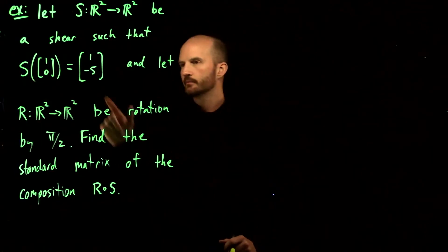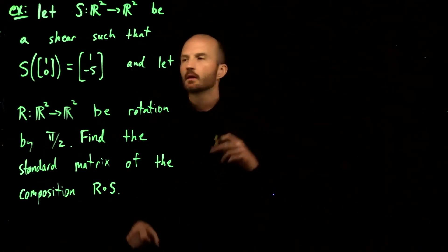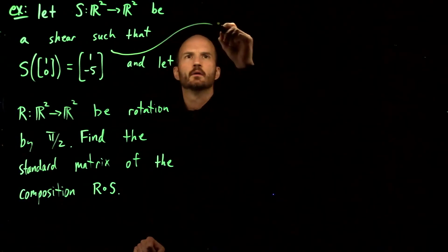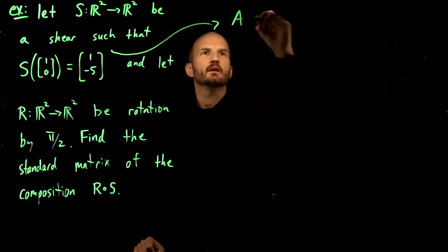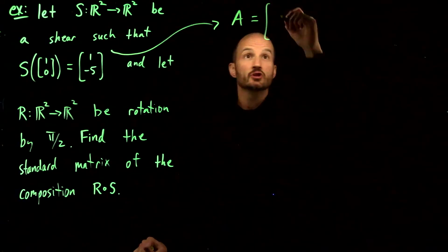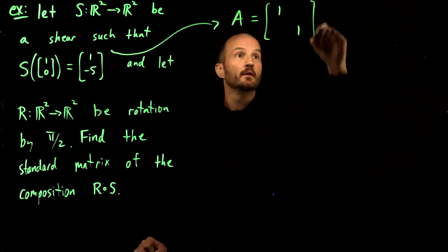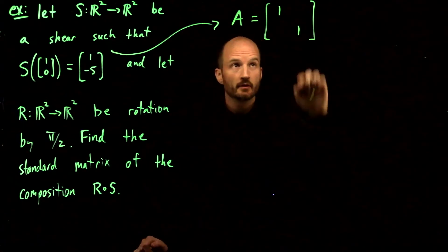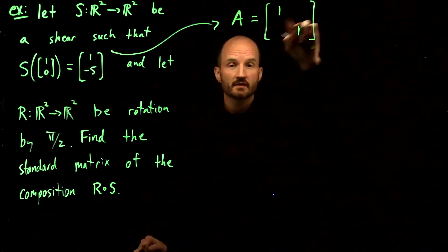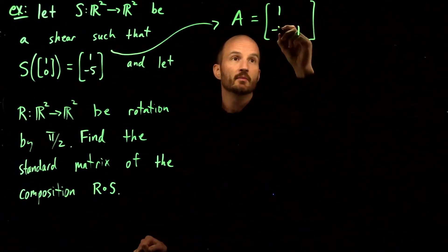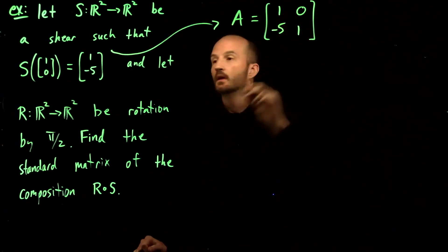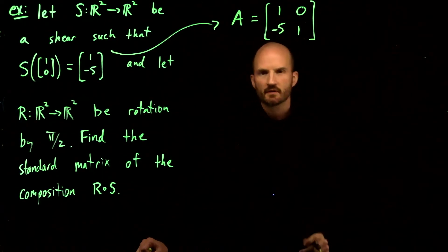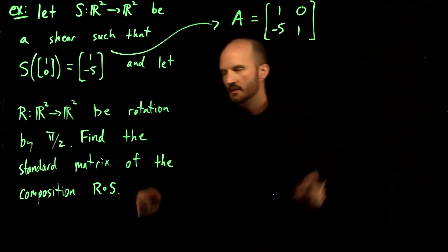So this shear, its standard matrix is—the shear starts here, and one of these is going to be zero and one is going to be non-zero. Given what we know here, that's going to be the non-zero. That's how I have it memorized.